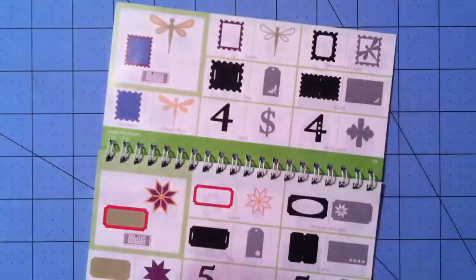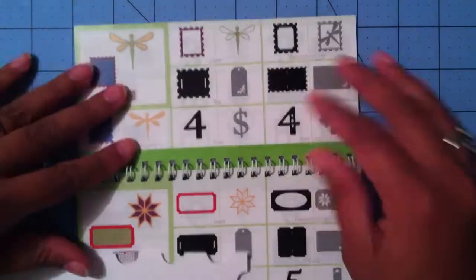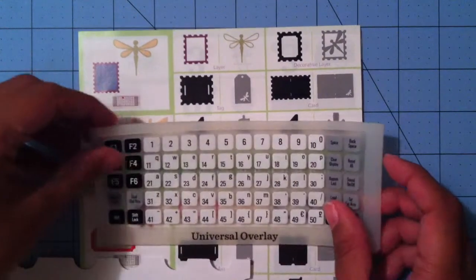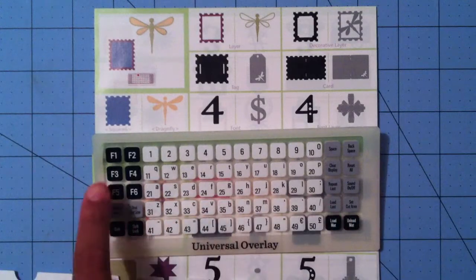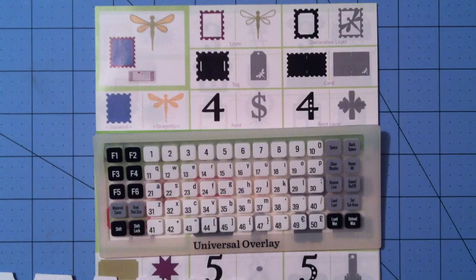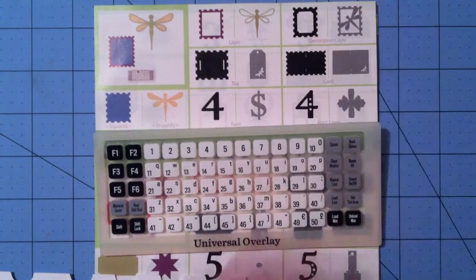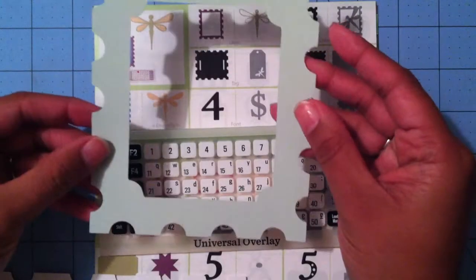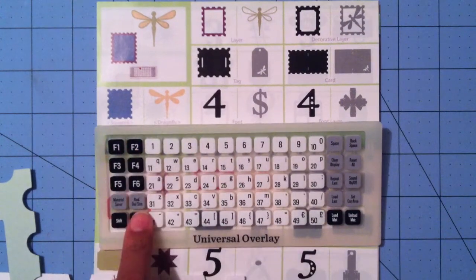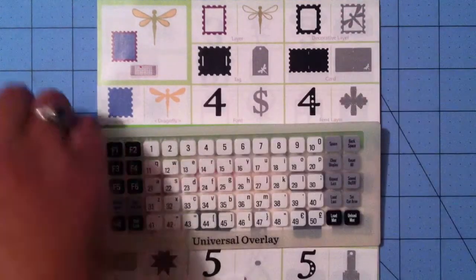So in order to cut this card out, you're going to need this piece right here, which is the card base. And in order to cut this card base, all you have to do is use this overlay. So you go to the card function, which would be this fourth one right here. On this keypad, it would say card. You touch that and then you just touch number four and you're good to go. That will cut your card base. Then we need this piece right here. And you just go to decorative layer, which would be number two. On your overlay it would say decorative layer. And then you hit button number four and that's it. And you have this piece right here.